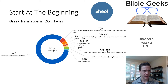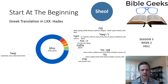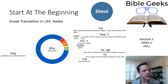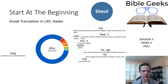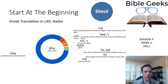Rumor has it that 70 translators put that together — and I'm thinking it was 70 translators in 70 days, thought of as a miracle. I should check up on that, but 70 translators is where I recall the number 70 coming from. Anyway, the usage: wasteland, underworld, void — that's Sheol.